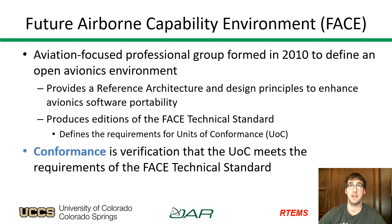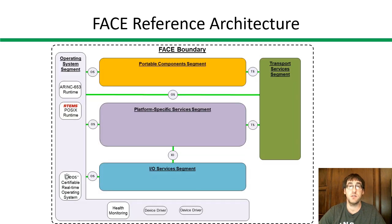A conformance test suite automatically verifies many of the requirements, while others use evidence provided by the software vendor. The FACE Technical Standard defines the FACE Reference Architecture, which was introduced in Edition 1.0 with five core segments that remain to this day: the operating system segment, portable components segment, platform-specific services segment, IO services segment, and transport services segment. The basic functionality of each segment is the same over time, although the interfaces have undergone significant changes, migrating from procedural-style interfaces toward an object-oriented approach and adoption of interface definition language.